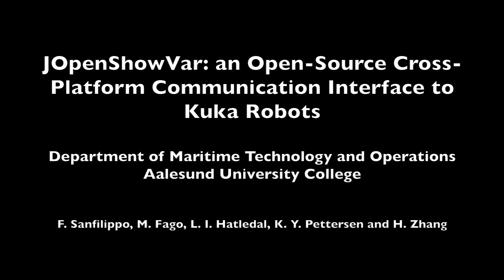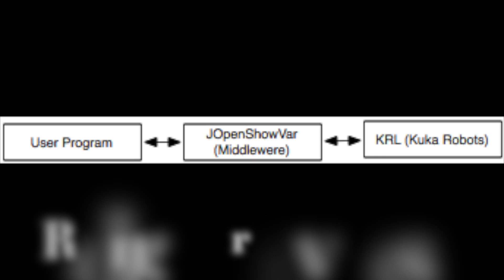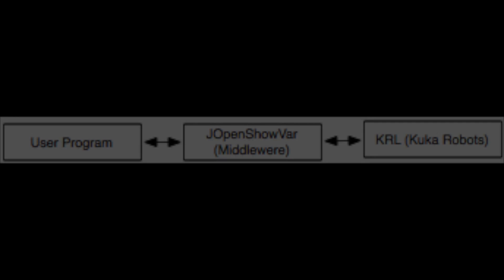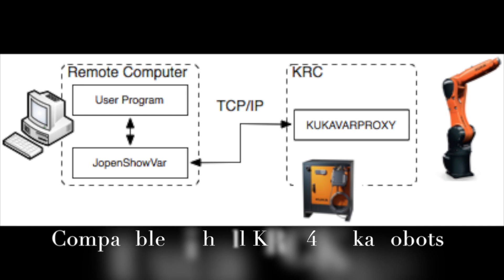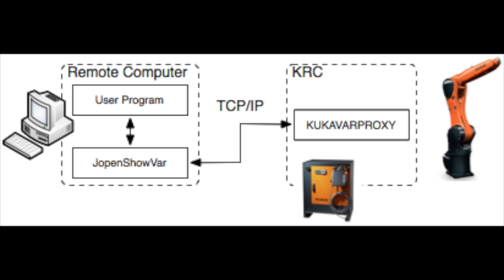JOpenShowVar is a Java open-source cross-platform communication interface to KUKA robots that allows for reading and writing variables and data structures of the controlled manipulators. This interface runs as a client on a remote computer connected with the KUKA controller via TCP/IP.